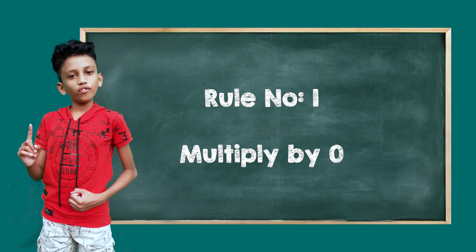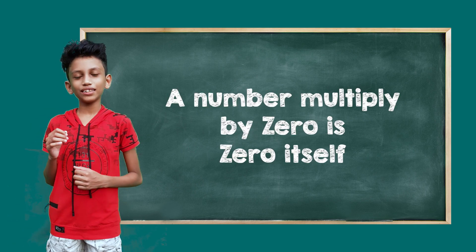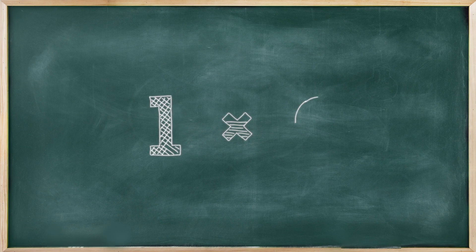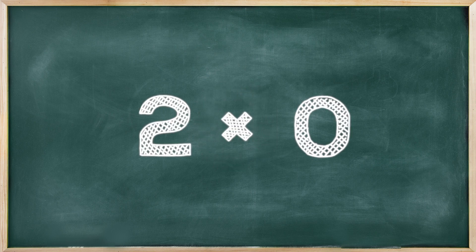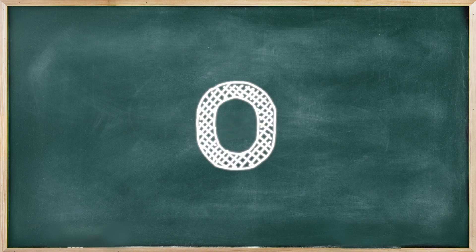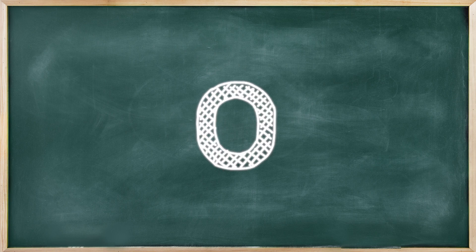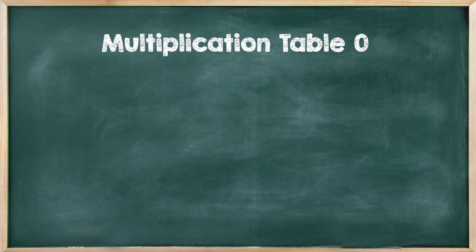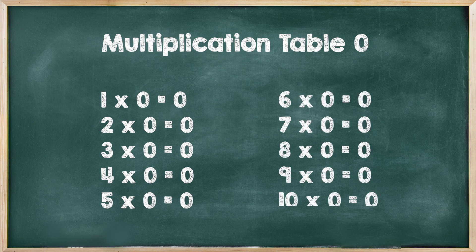Rule number 1: Multiplying by 0. A number multiplied by 0 is 0 itself. Let's see. 1 times 0 is 0. 2 times 0 is 0. 3 times 0 is 0. Like that, we can make the multiplication table of 0.